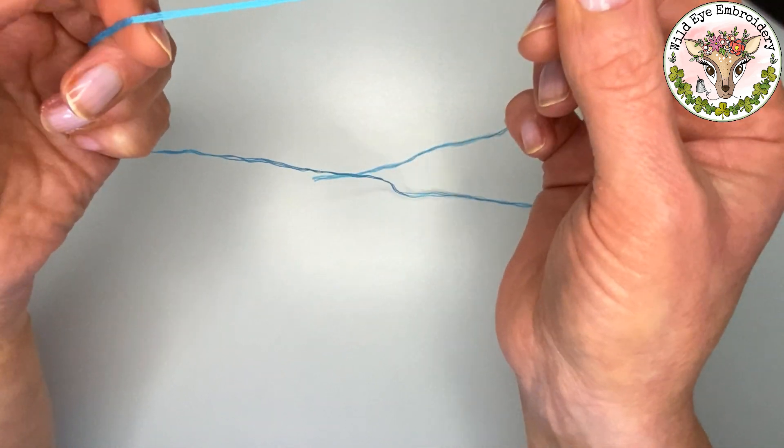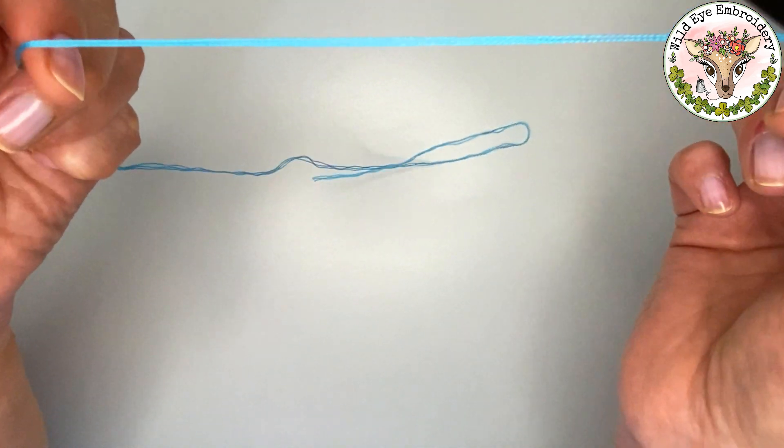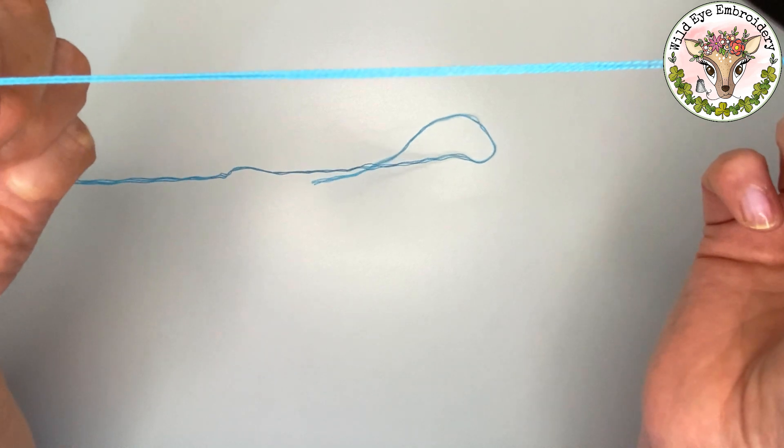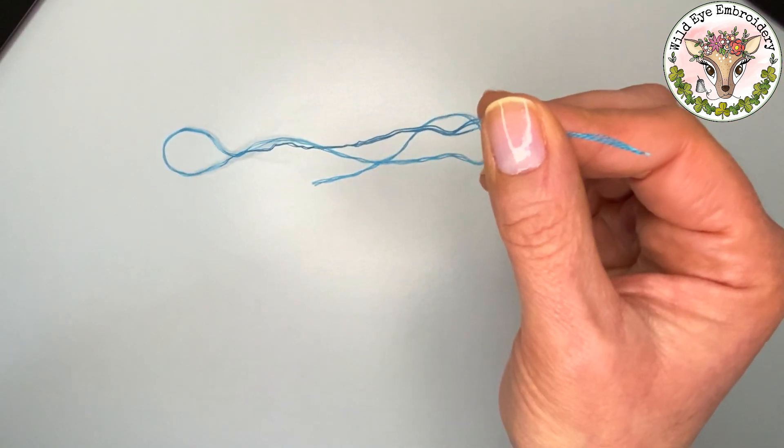I'm just going to pull this thread in front of the camera and hopefully you can see how smooth and flat that is lying. That's absolutely perfect. That's exactly the way we want our embroidery floss to be before we start embroidering.